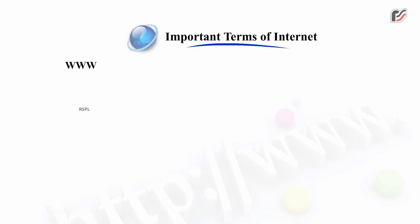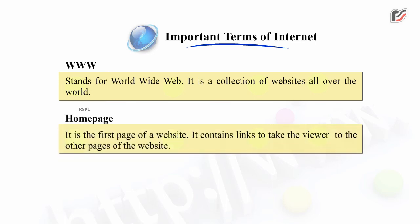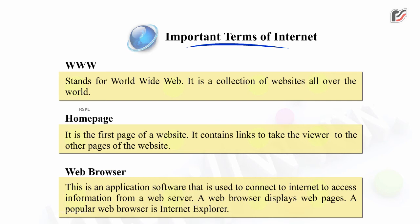WWW stands for World Wide Web. It is a collection of websites all over the world. Home page – it is the first page of a website and contains links to take the viewer to the other pages of the website. Web browser – this is an application software used to connect to Internet to access information from a web server. A web browser displays web pages. A popular web browser is Internet Explorer.